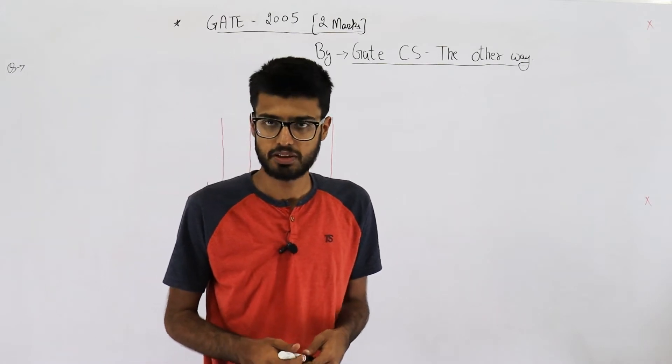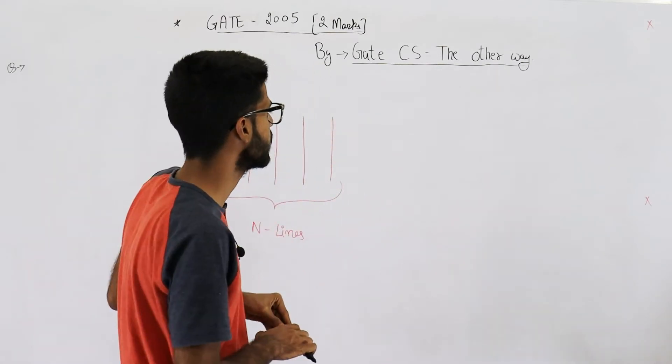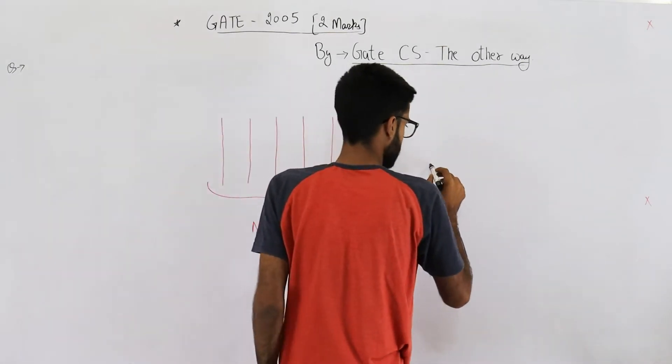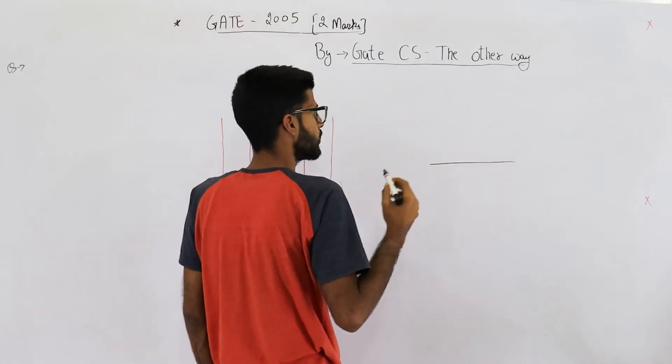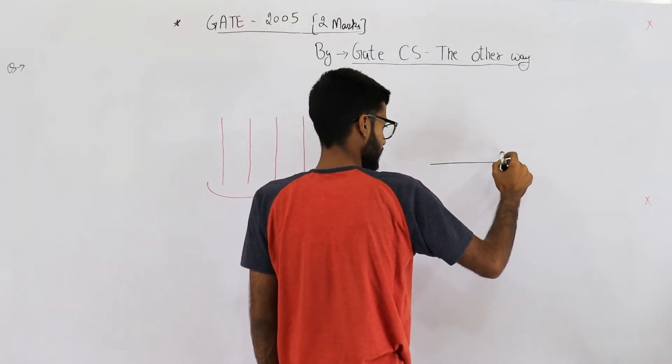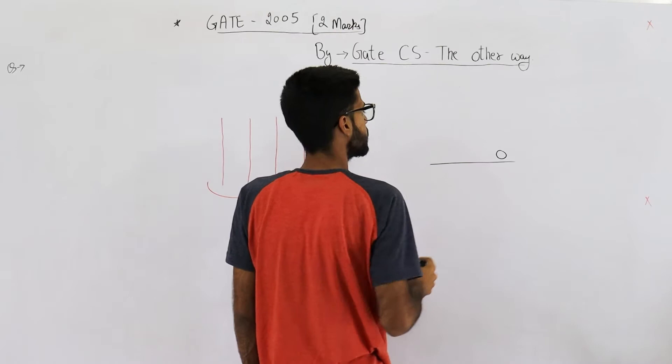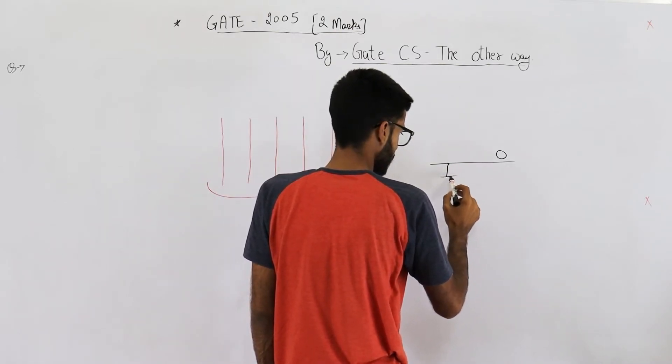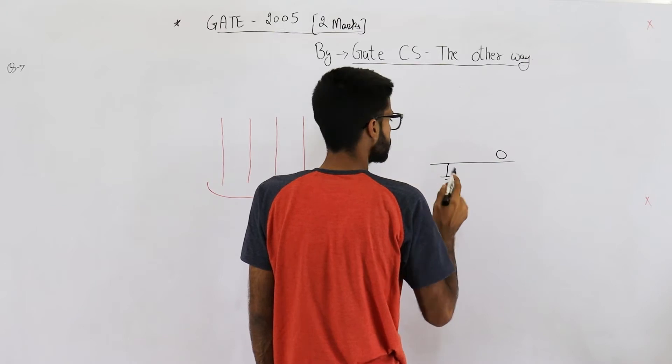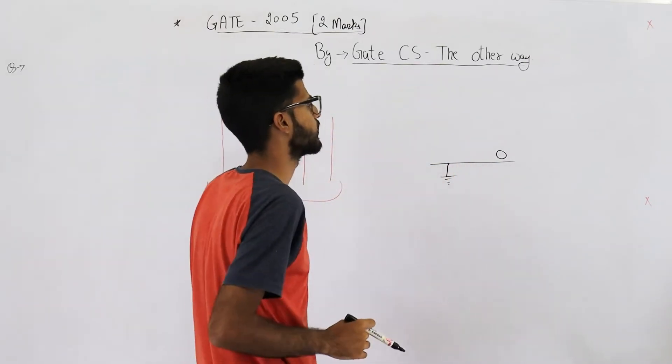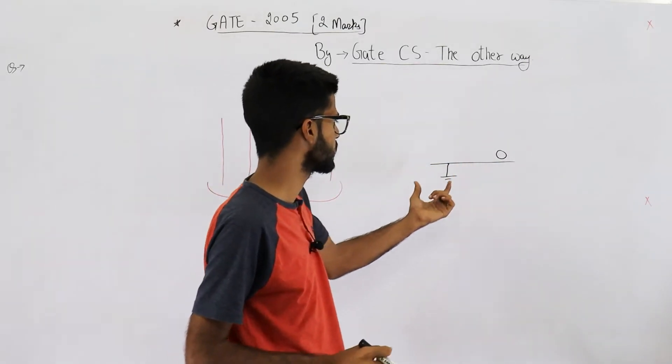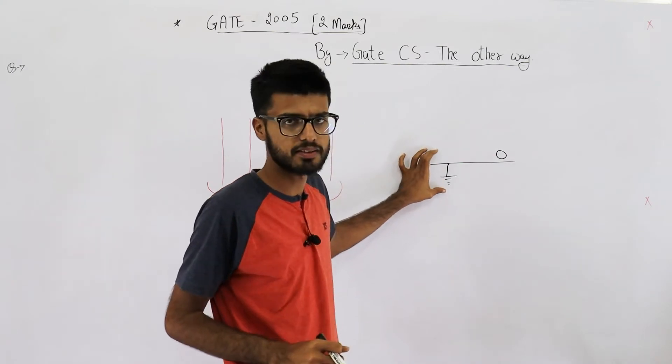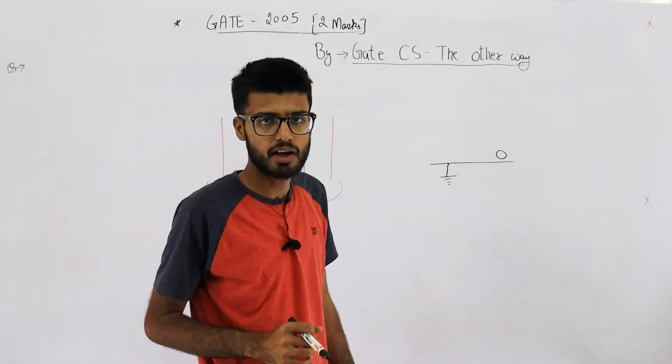For example, say there's some line in a circuit and somehow every time the logic value here is zero. That means due to some error it got grounded - some internal error in the circuit caused grounding of this wire. Then you'll say it is always stuck at zero.